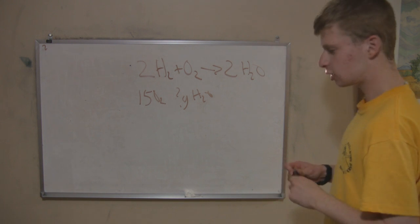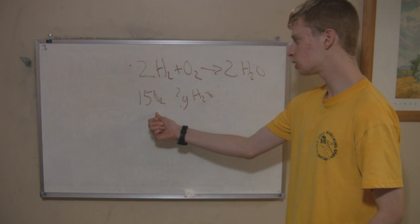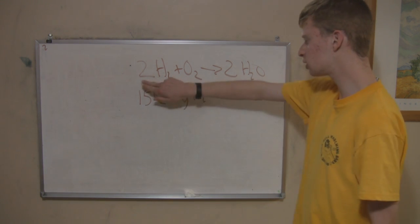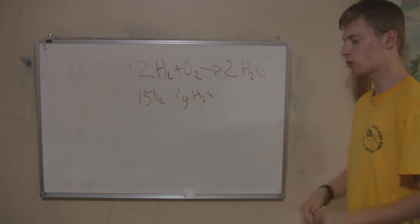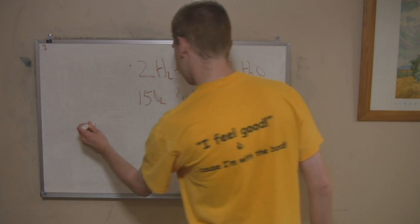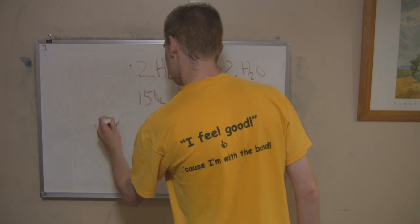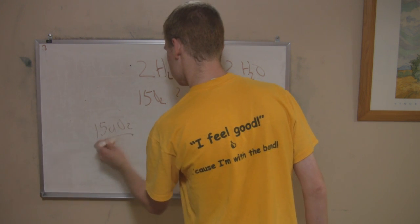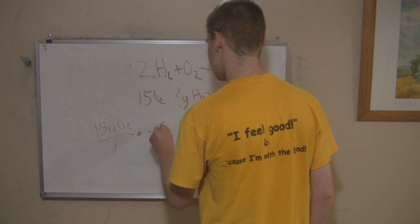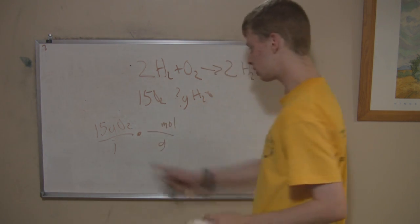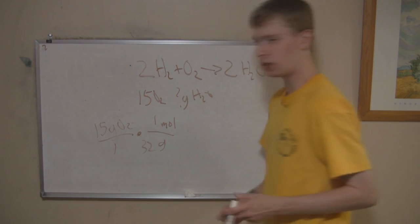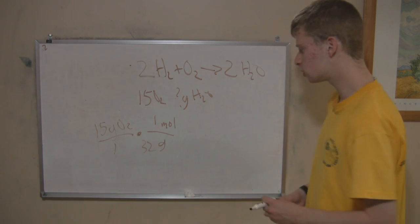So, first you're going to convert that to moles. Then you're going to convert the number of moles of hydrogen to moles of water using the coefficients. And then you'll convert the moles to grams, because it asks for grams. So, you start out with 15 grams of oxygen, put that over one. Now you cancel out grams, put moles on the top, and you know that there's 32 grams per mole. The periodic table will say 16, but you have two of them because it's O2.